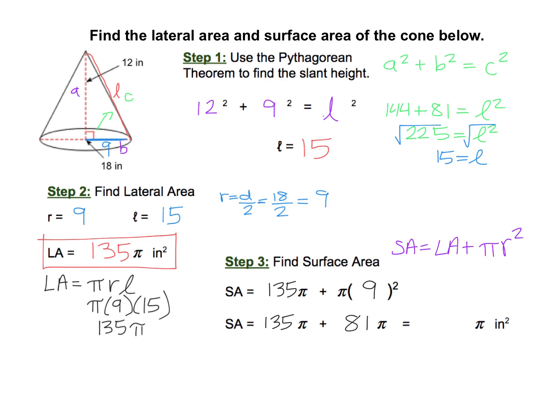And once again, since these both have pi's in them, they're like terms. So just add the numbers in front. 135 plus 81 is 216. So the surface area of the cone here would be 216 pi inches squared.